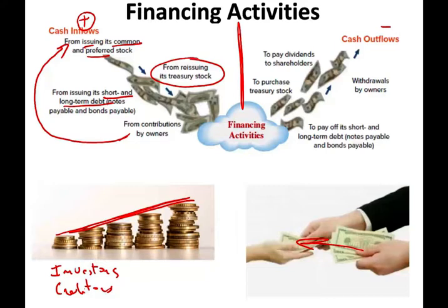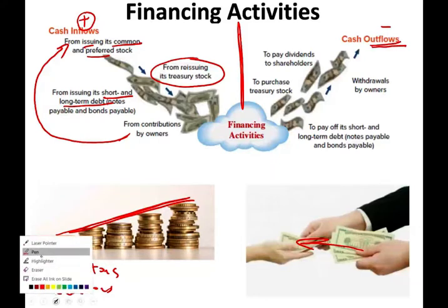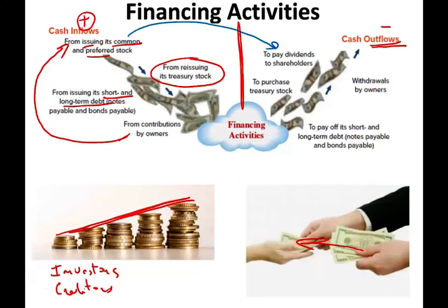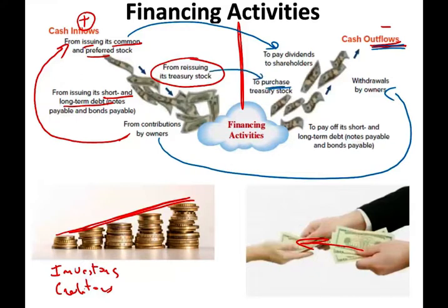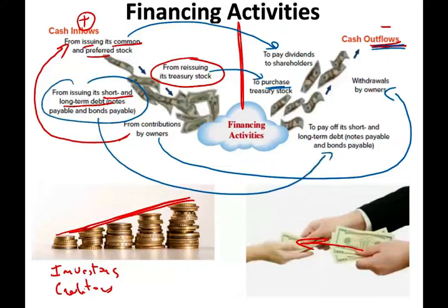The outflows are the result of the inflows. If you have stocks, you have to pay dividends, and when you pay dividends it's an outflow of cash. When the owner contributes money, sometimes they take money out. And before you reissue treasury stock, you have to buy the treasury stock. Also, you borrow money and then you pay off the money — whether it's short-term or long-term debt. It's basically issuing and paying your own stocks, bonds, and debt.